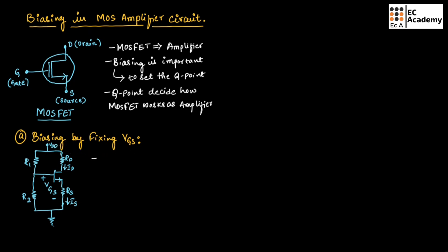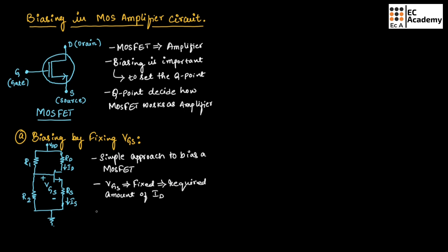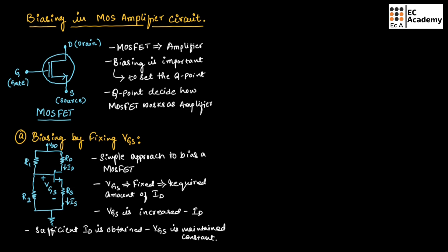This is one of the simple approaches to bias a MOSFET. In this type of biasing, VGS is fixed so that we can get the required amount of drain current. Initially, VGS is increased until we get the required amount of ID. Once sufficient drain current is obtained, VGS is maintained constant. This can be obtained by using a suitable voltage divider circuit.